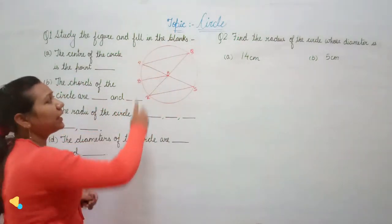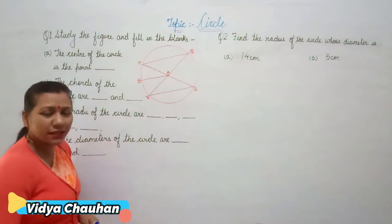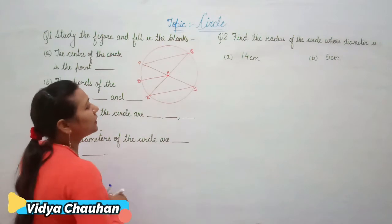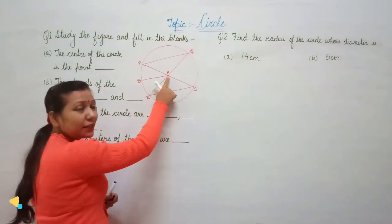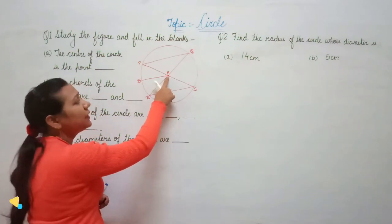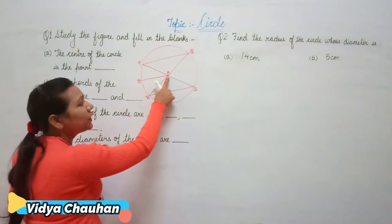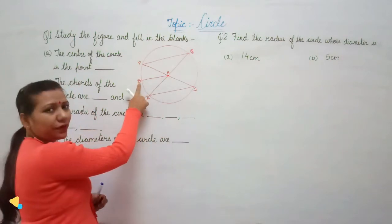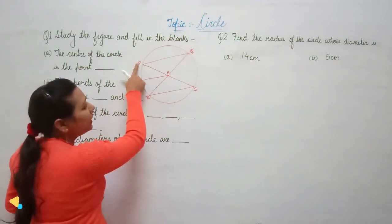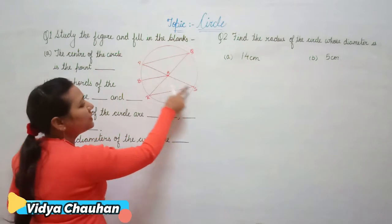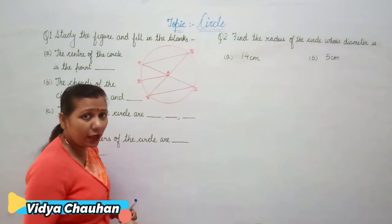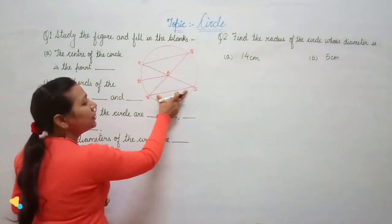Here you can see a circle with a few lines. The point at the center is called the center of the circle. The distance or line segment from the center to the circumference is the radius of the circle. The line segment which joins the extreme points on the circumference passing through the center is called the diameter.